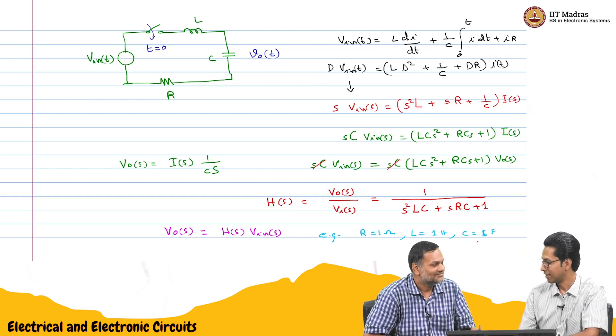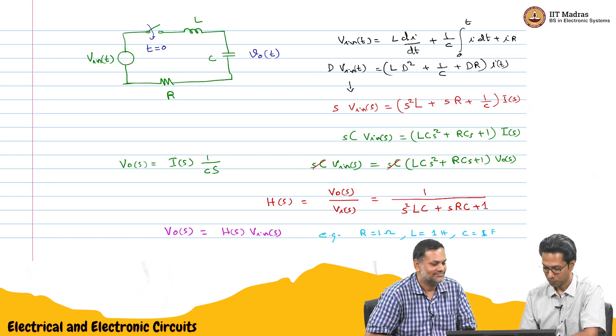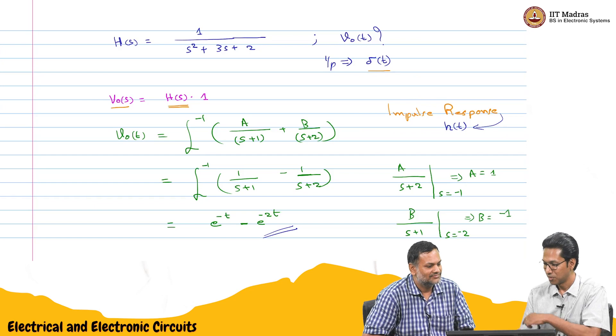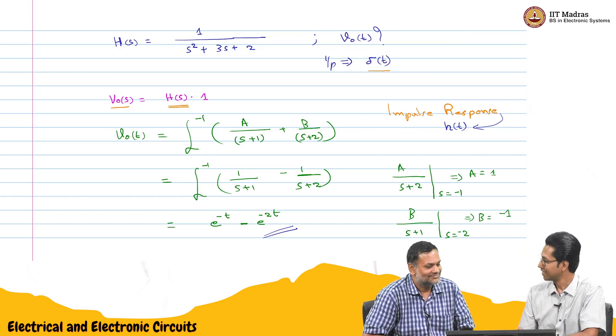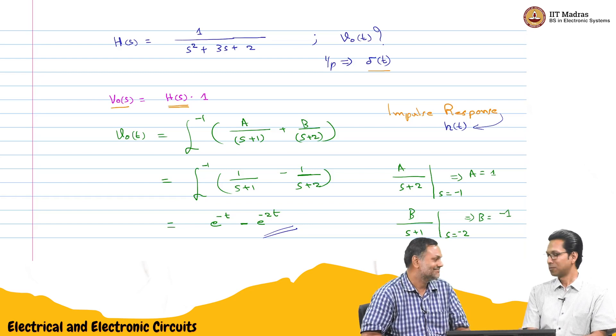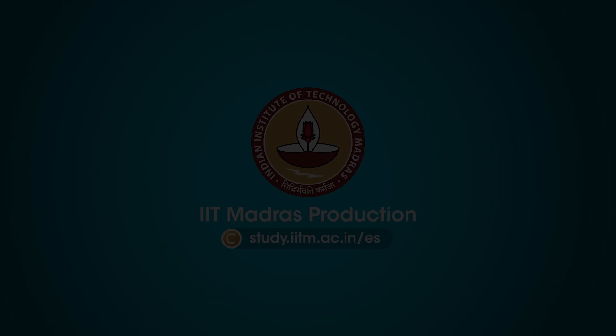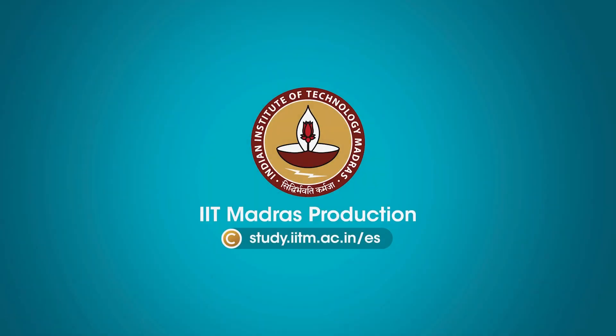Students could try maybe for this value, what is the V naught of t. And when the input is delta of t, we actually got the impulse response. Basically, it just tells us what the system is.